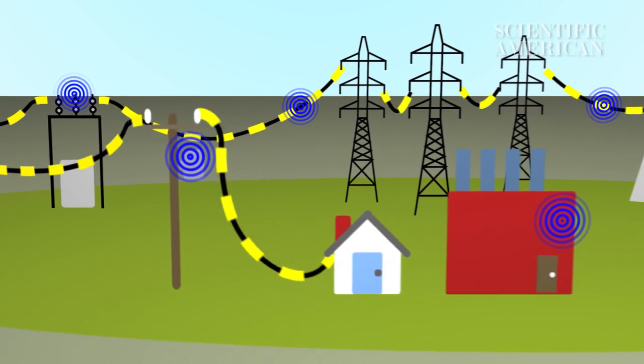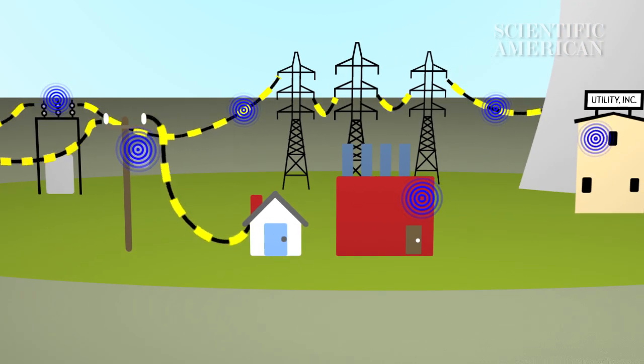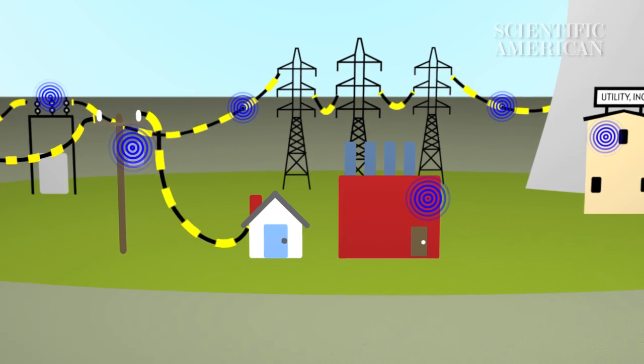This flood of data will be quickly parsed to locate power failures, reroute electricity, or avoid overheating power lines.